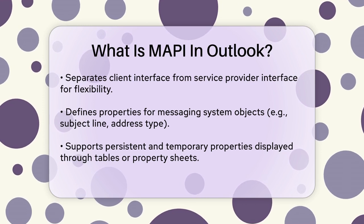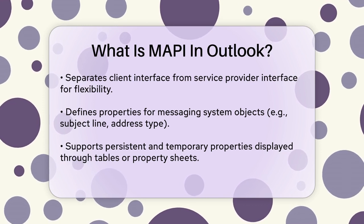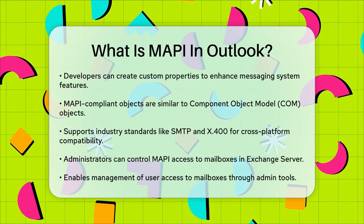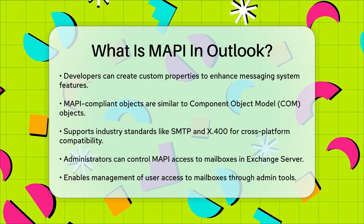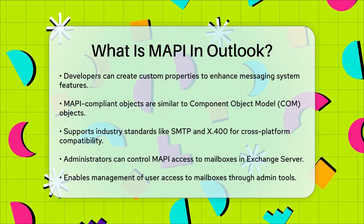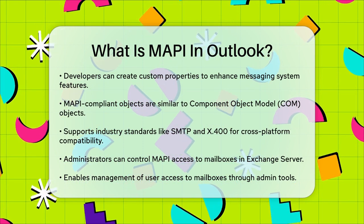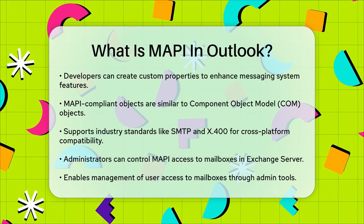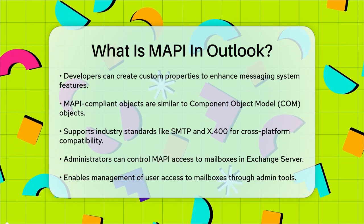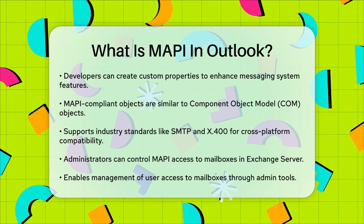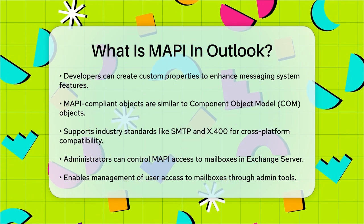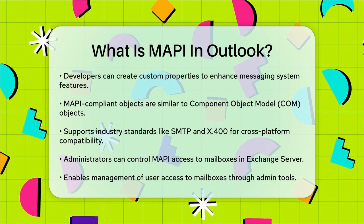In terms of technical details, MAPI-compliant objects are similar to Component Object Model, COM, objects, and support industry standards like SMTP and X.400. This cross-platform support means MAPI applications can run on various Windows operating systems. Administrators have control over MAPI access to mailboxes in Exchange Server, which can be enabled or disabled using the Exchange Admin Center or the Exchange Management Shell. This control is crucial for managing user access to their mailboxes.